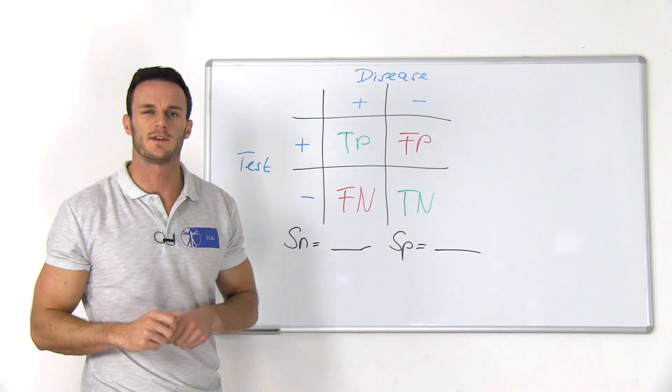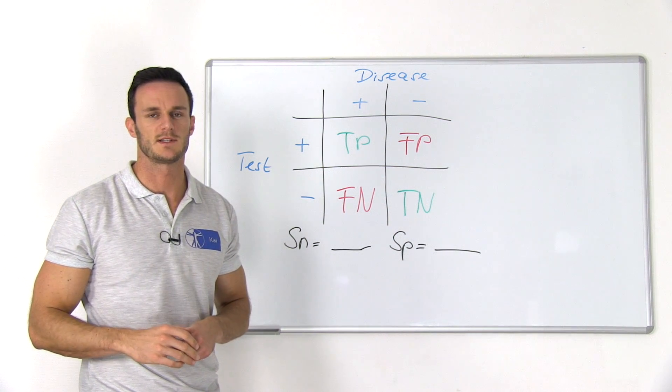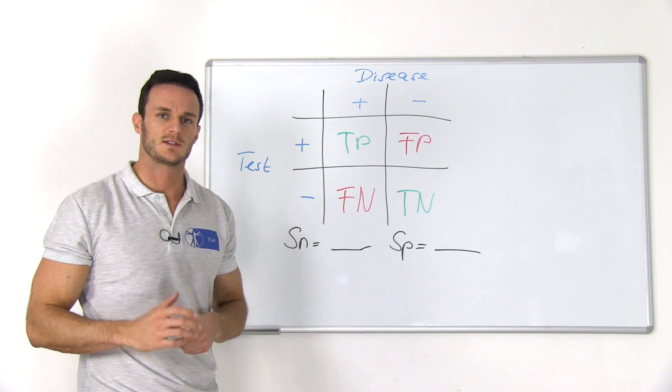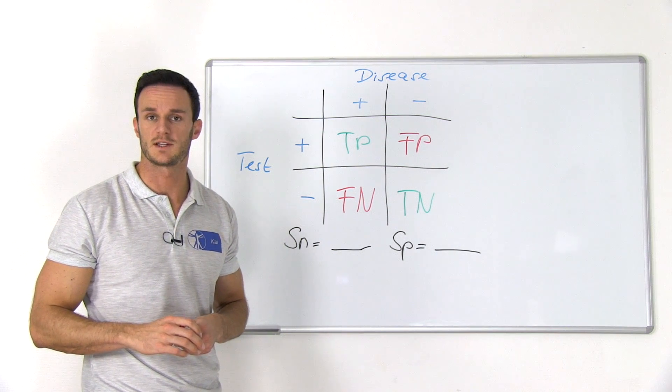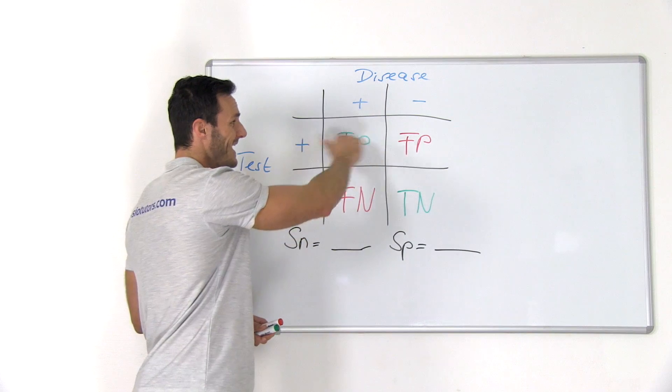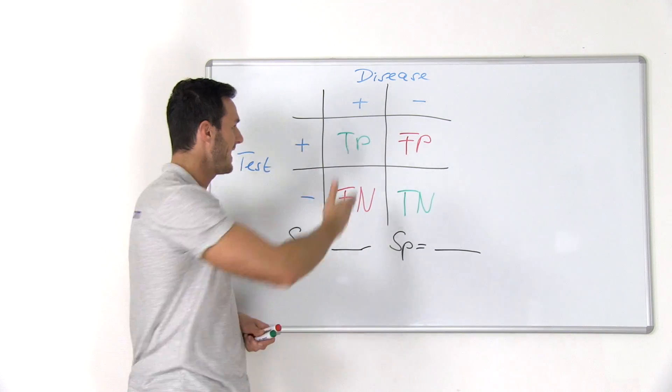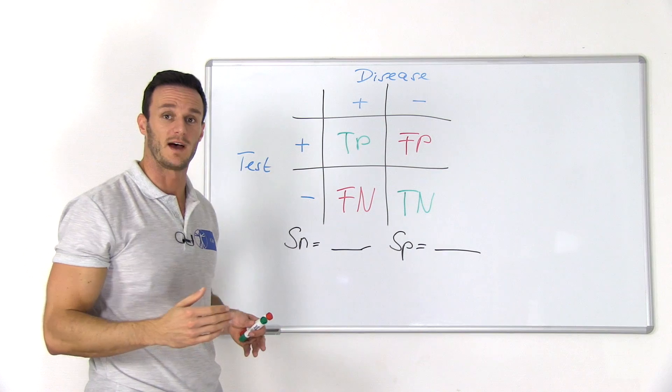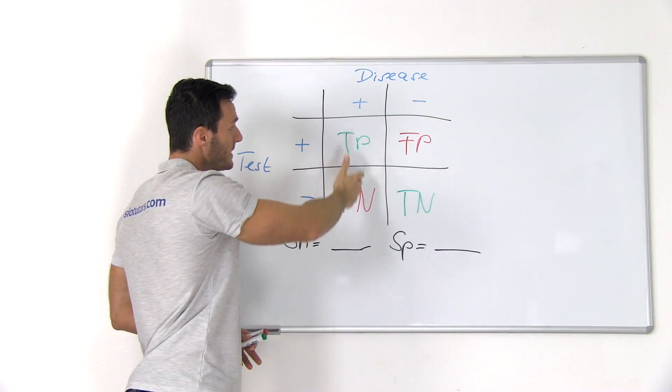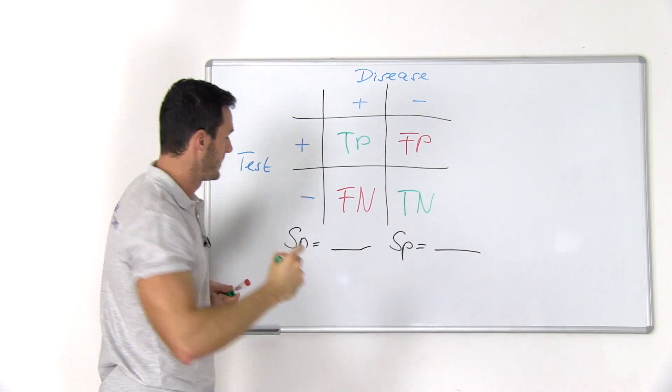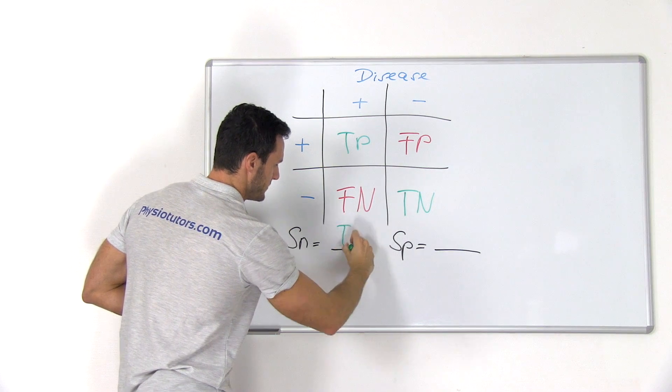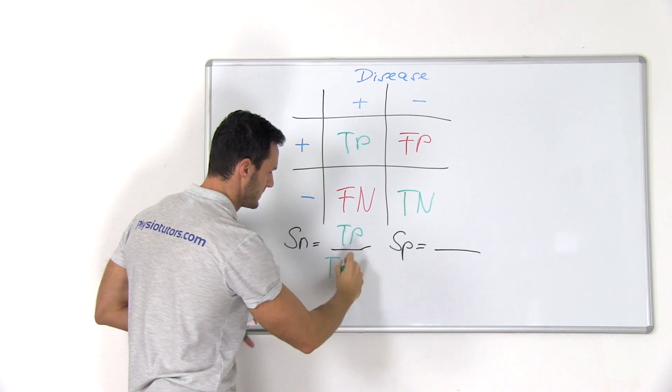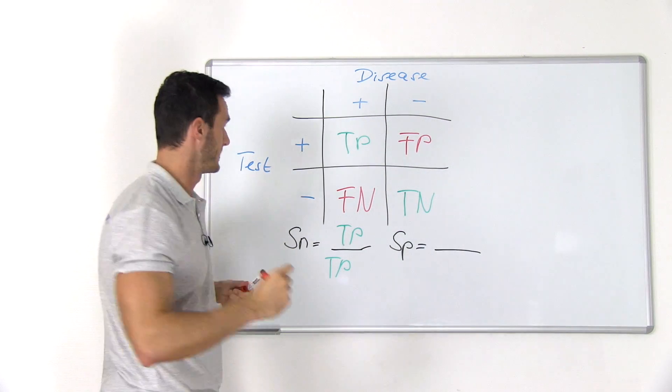So let's look at the definitions of sensitivity and specificity, which will also help us to calculate those values. Sensitivity is the proportion of patients with a positive index test amongst all the patients that have the disease. So to calculate sensitivity, we have to divide all true positives through all the people that have the disease. So all true positives divided through all true positives plus all false negatives.